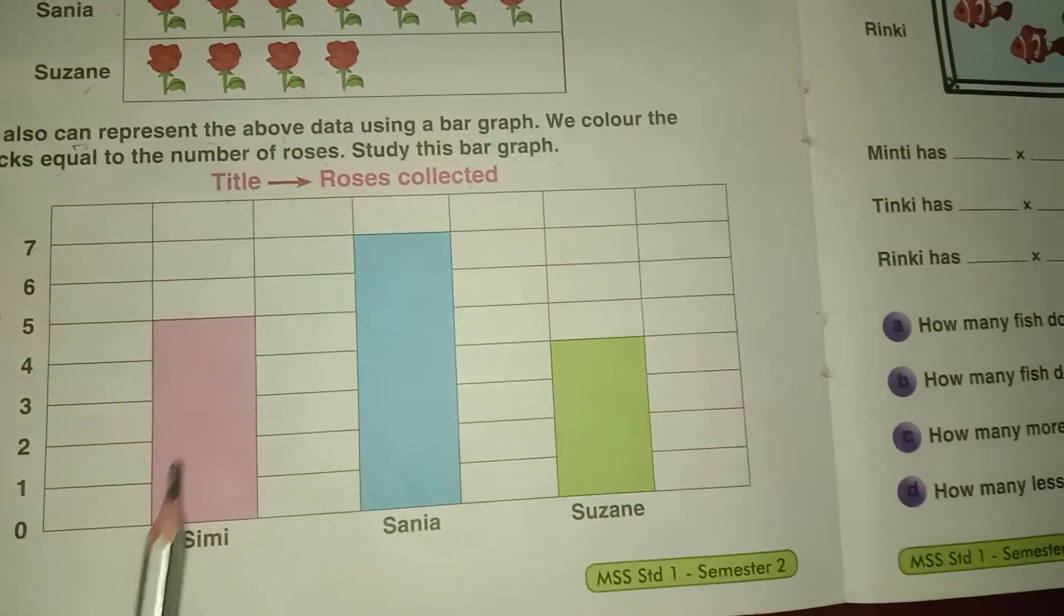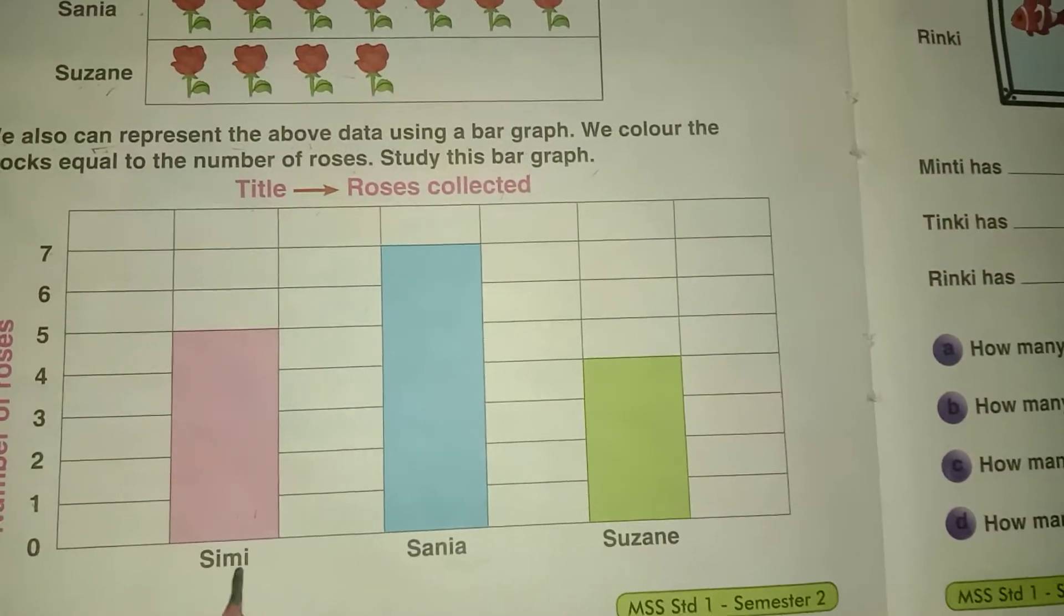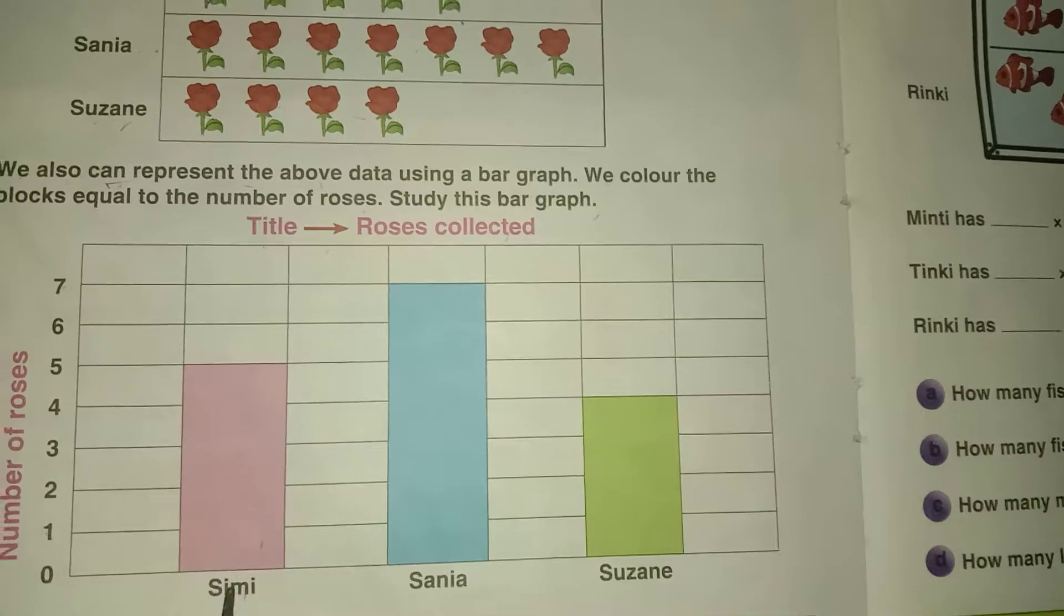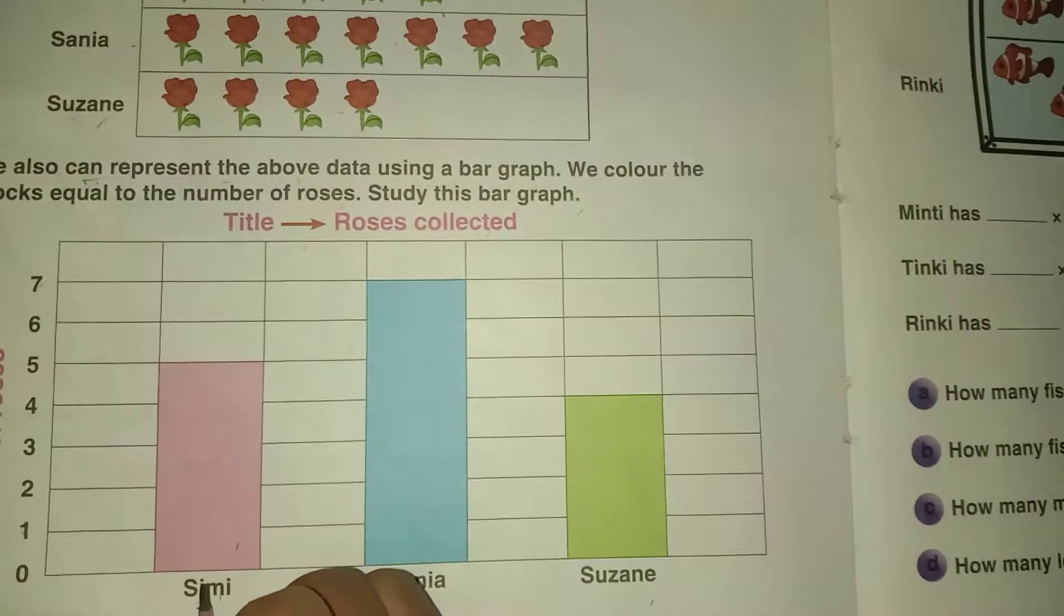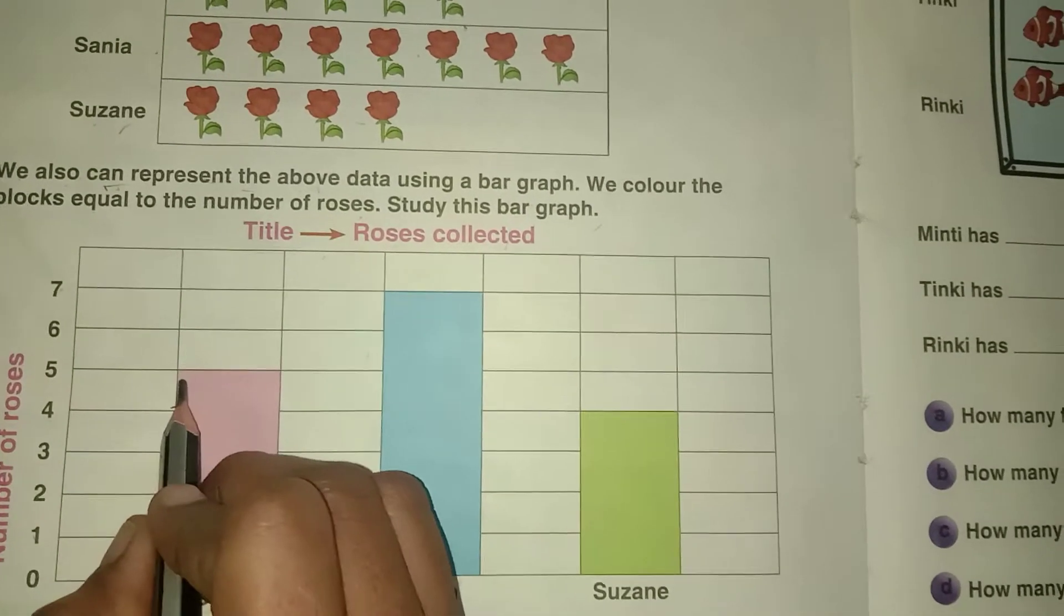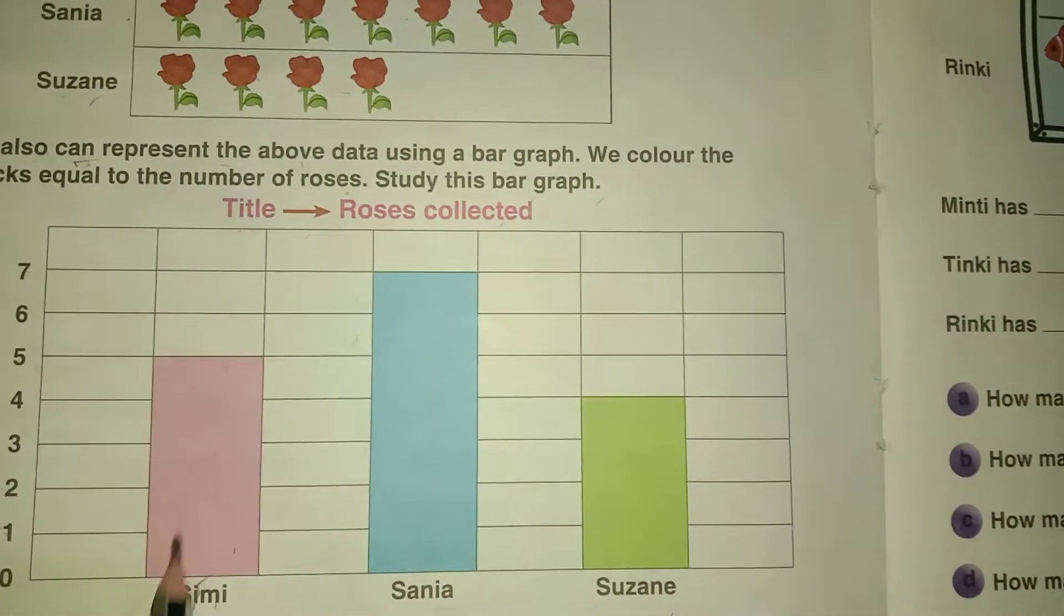Okay and next draw the blocks here. Simee, Sanya and Suzanne. Simee collected how many roses? 5 roses means 5 blocks are colored here.